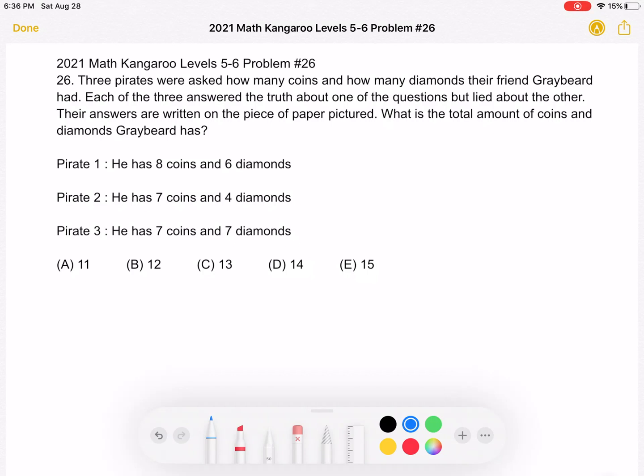An important part of this problem is that each of the three pirates is asked about the number of coins Greybeard has and the number of diamonds Greybeard has. And they'll tell the truth about one of the questions but lie about the other.